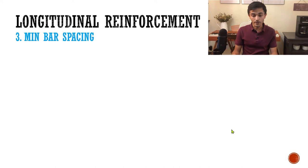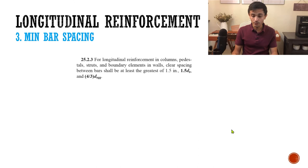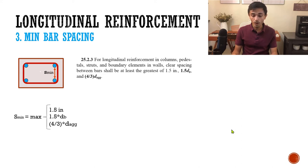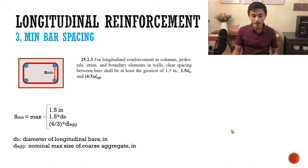How about the minimum bar spacing? To avoid honeycombing, you don't want your bars too closely together. The code says that the clear spacing must be at least one and a half inches — note that this is clear spacing, not center-to-center; it's measured from the edge of the rebar. It has to be at least one and a half inches, one and a half times the diameter of the longitudinal rebar, or four-thirds the nominal maximum size of the coarse aggregate.